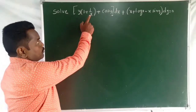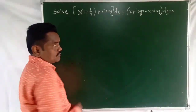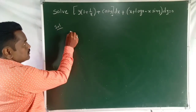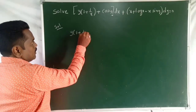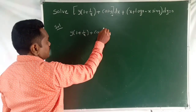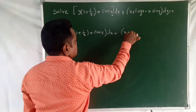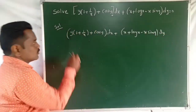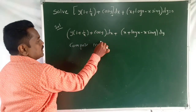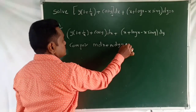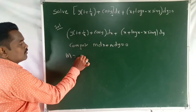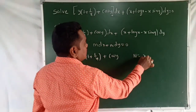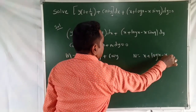The problem is: (Y(1 + 1/X) + cos Y) dx + (X log X − X sin Y) dy = 0. Comparing with M dx + N dy = 0, we get M equal to Y(1 + 1/X) + cos Y, and N equal to X log X − X sin Y.